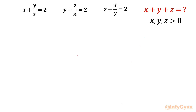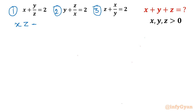So let's write our equations. Let me consider this is equation 1, this is equation number 2, and this is equation number 3. I will take the LCM — or you can say for equation 1 we will multiply with z, equation 2 we will multiply with x, and equation 3 we will multiply with y. Both are having the same meaning.